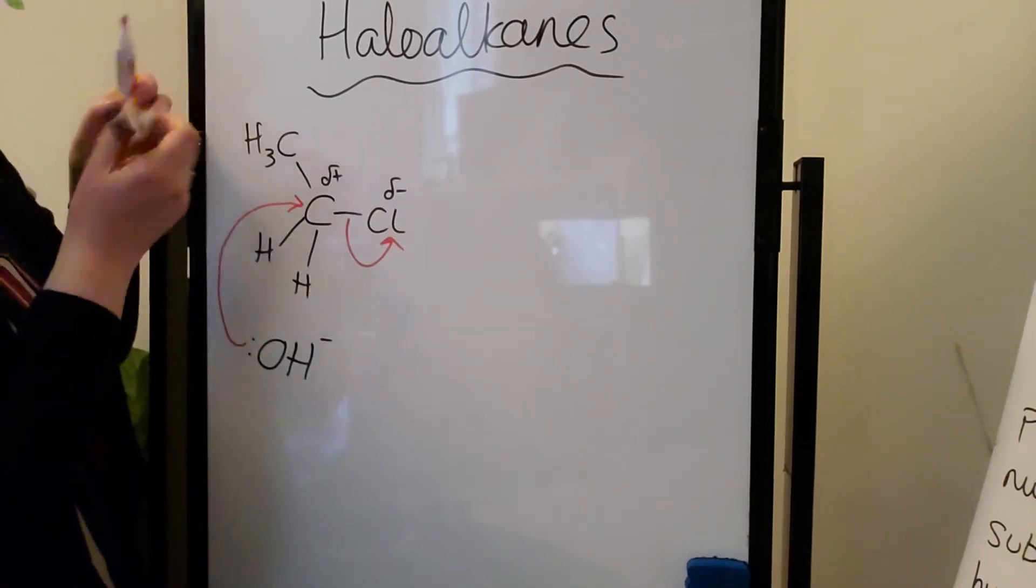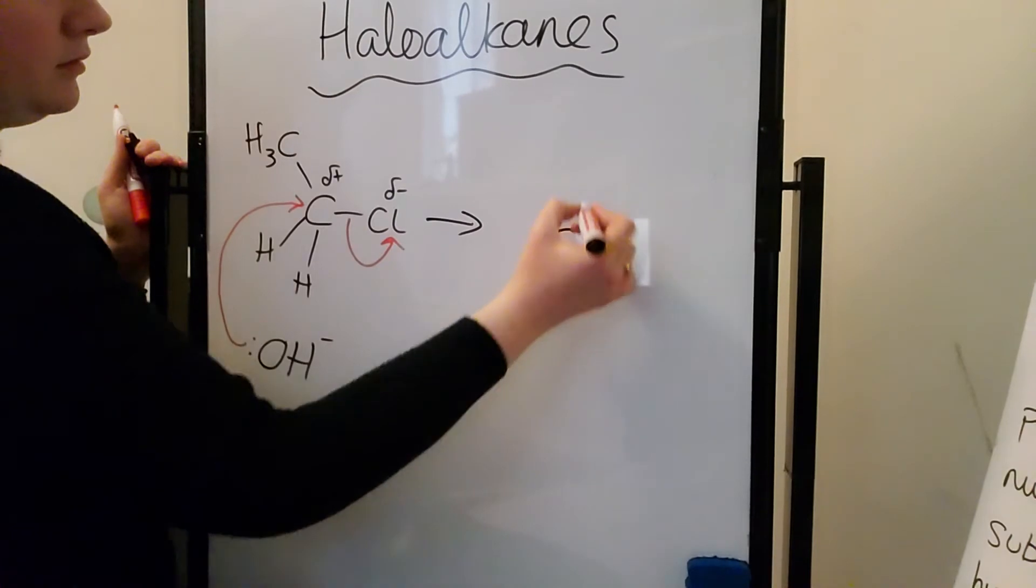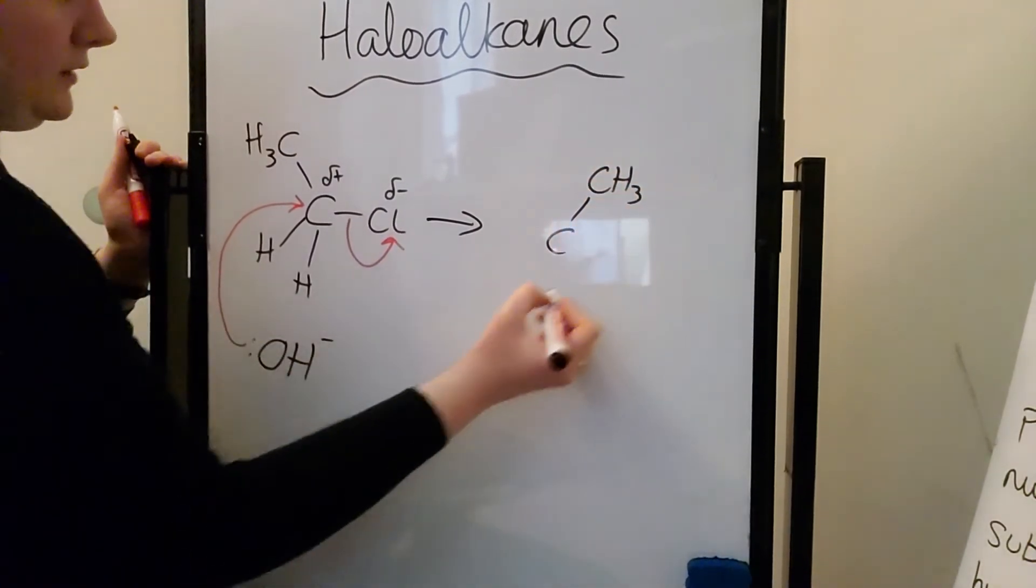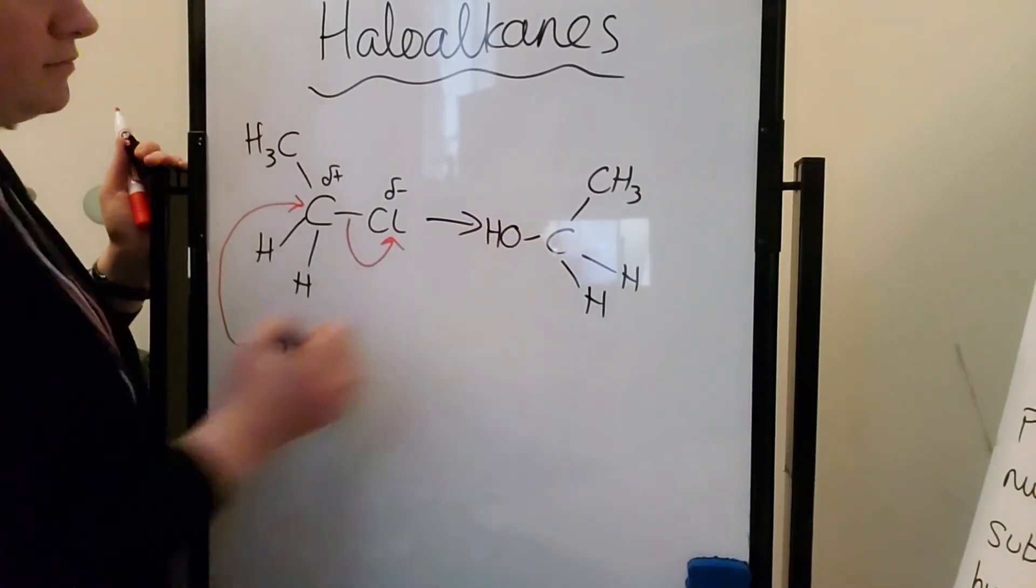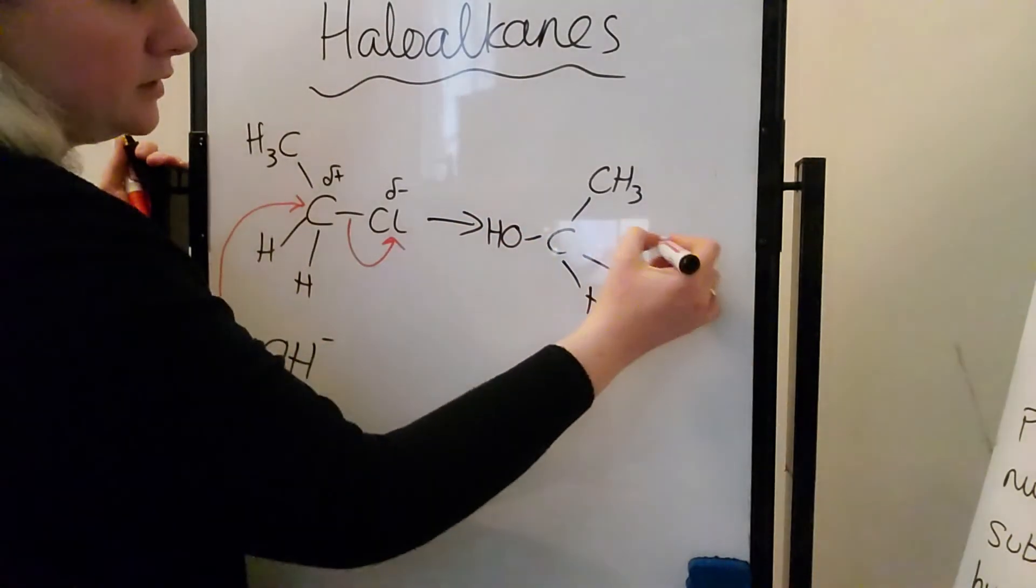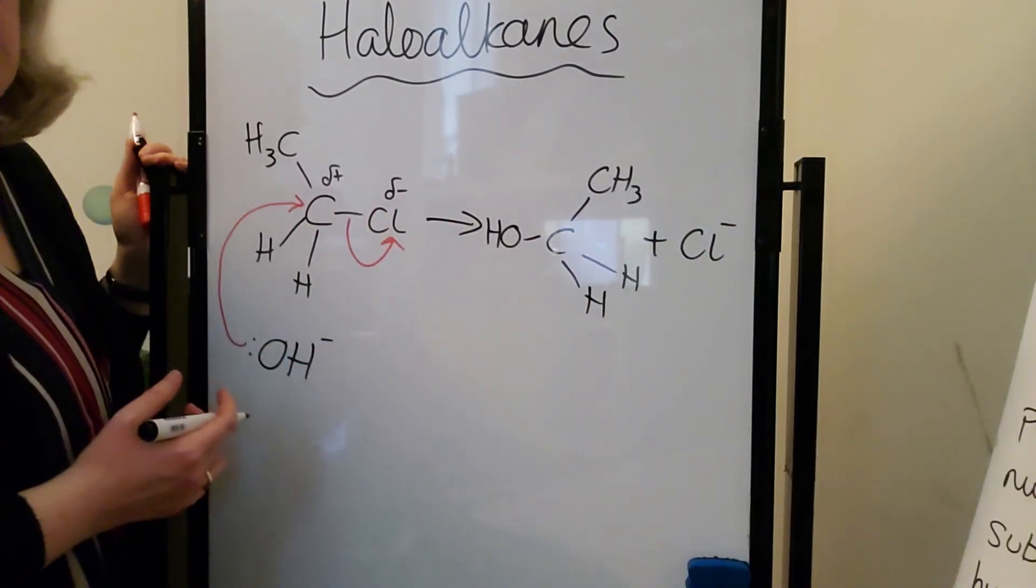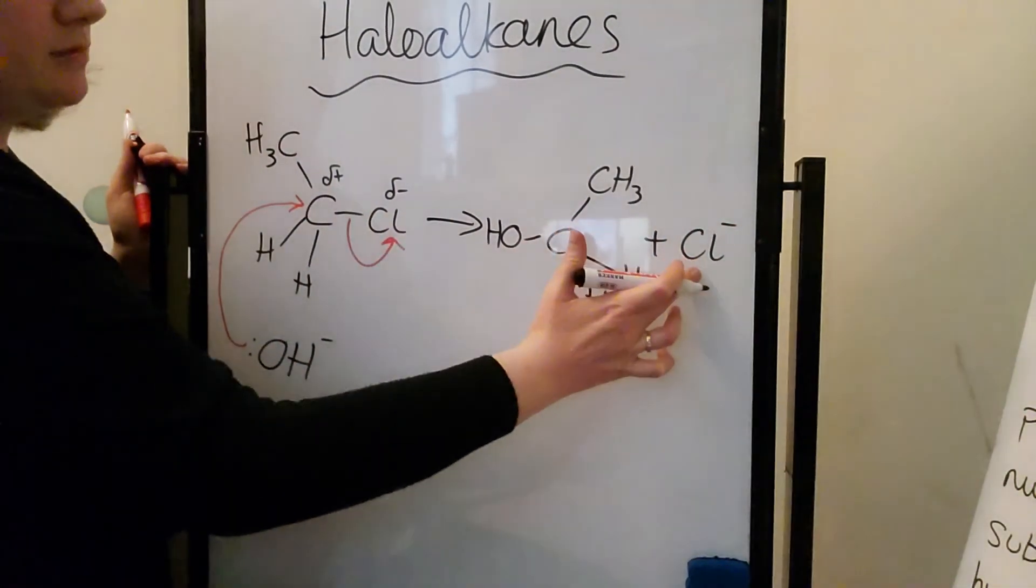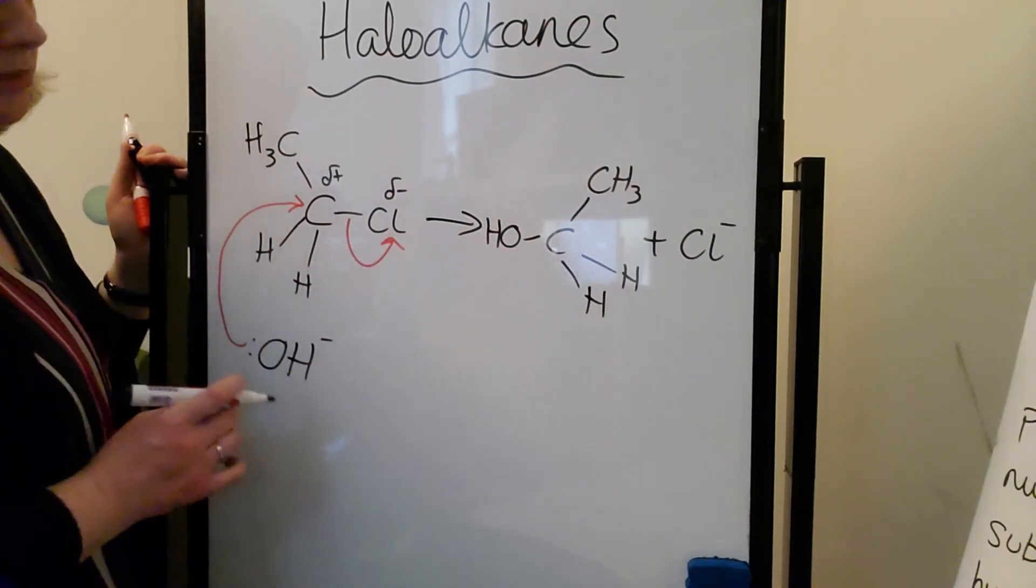That's going to give... So now I've got an alcohol, and always remember to draw the other species generated from your reaction. So I'm generating a chloride ion, and I've made myself a primary alcohol.